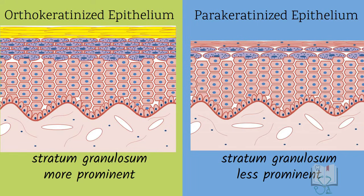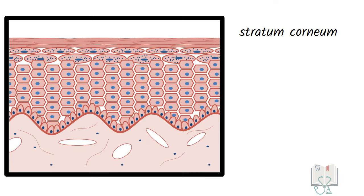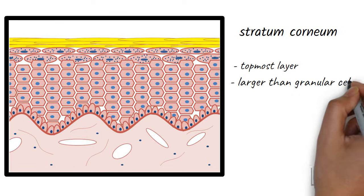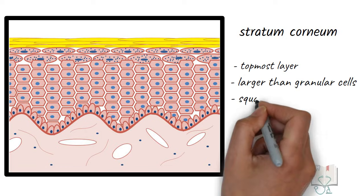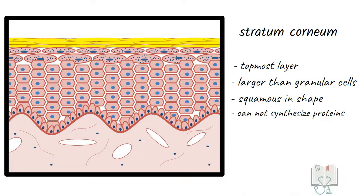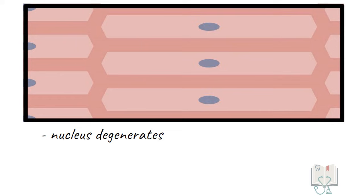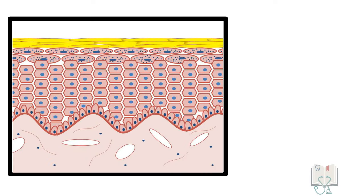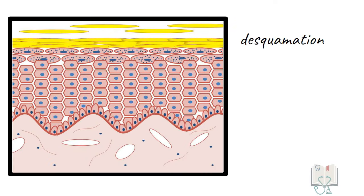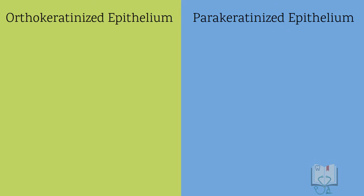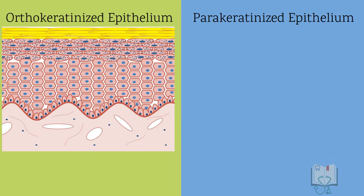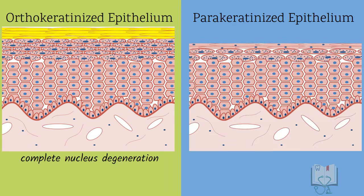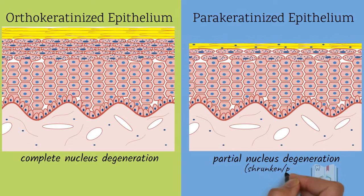Stratum corneum is the topmost layer of the epithelium. The cells in this layer are larger than the granular cells; they are flatter and appear squamous in shape. These cells cannot synthesize any proteins because the nucleus undergoes complete degeneration. The cytoplasm is dehydrated and densely packed with cross-linked cytokeratins. These cells finally shed off by the process of desquamation. In orthokeratinized epithelium, complete degeneration of the nucleus takes place, whereas in parakeratinized epithelium, only partial degeneration occurs, so the nucleus is seen as a shrunken or pyknotic nucleus.